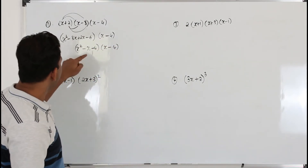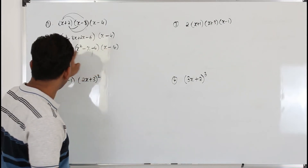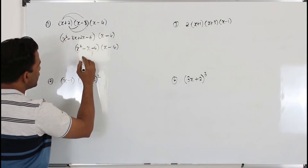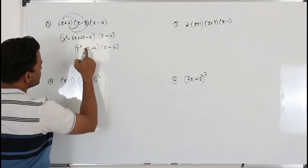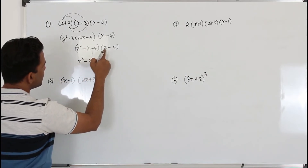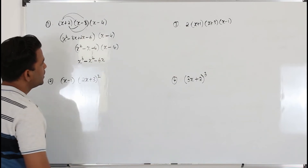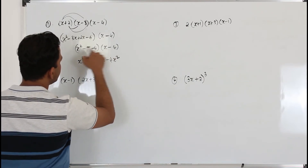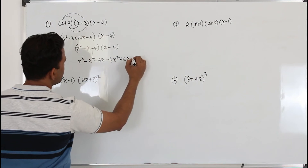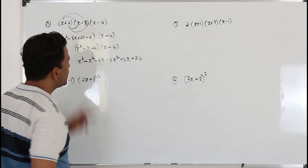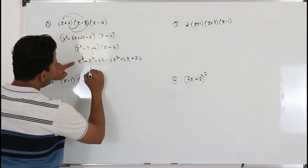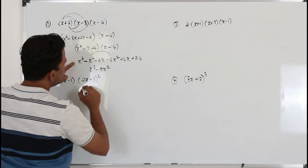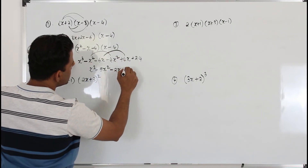Then take x and multiply everything: x times x square is x cube, x times x is x square, x times negative 6 is negative 6x. Now take negative 4 and multiply everything: minus 4x square, minus times minus is plus 4x, minus times minus is plus 24. Simplify the like terms: x cube, minus 1 minus 4 is minus 5x square, minus 6 plus 4 is minus 2x, plus 24. That's how you simplify three factors.